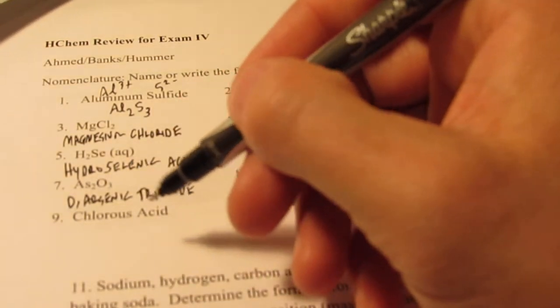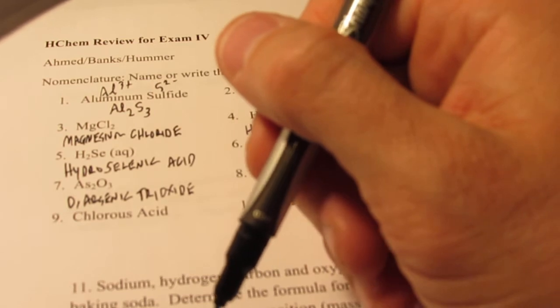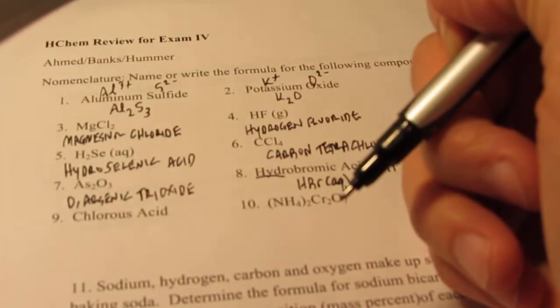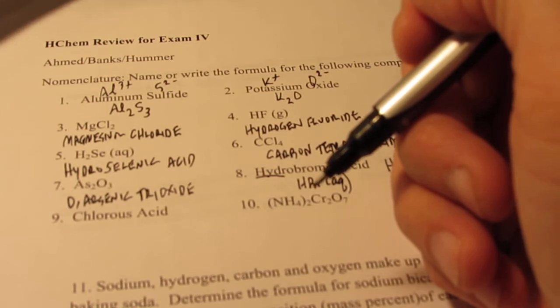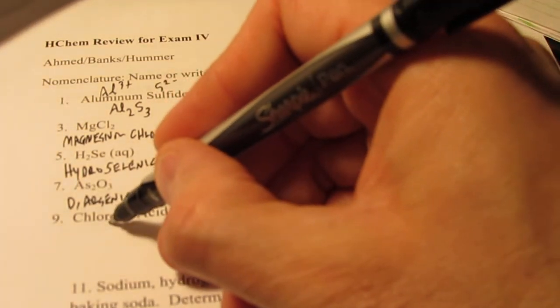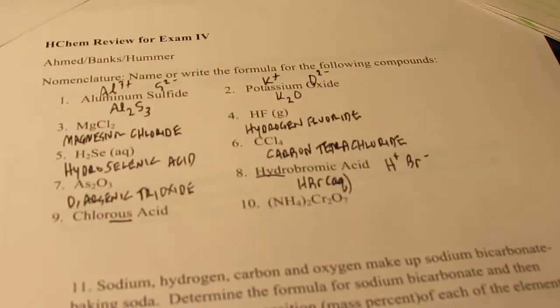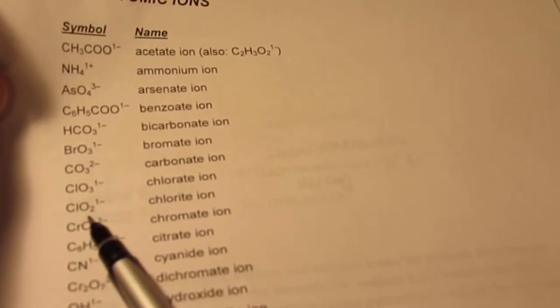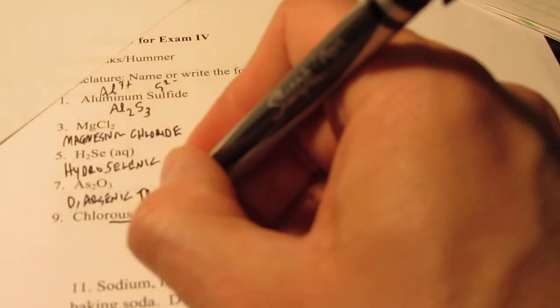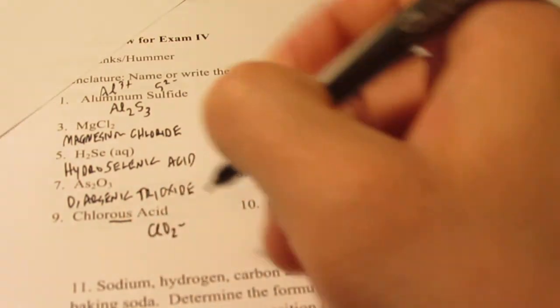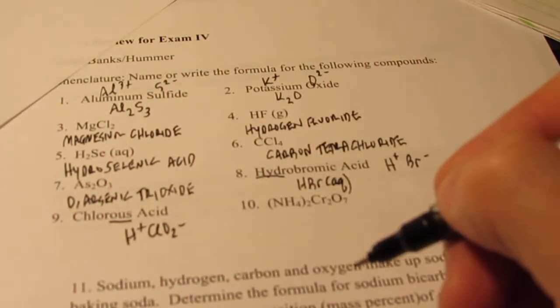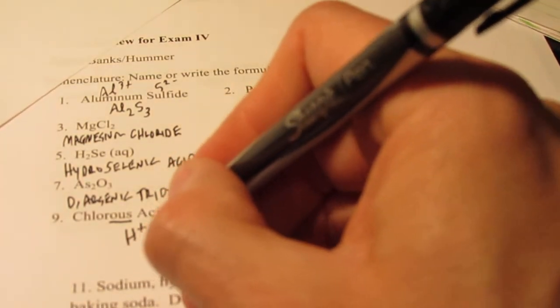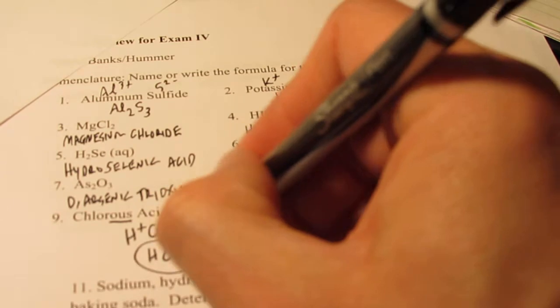Chlorous acid. Now this guy has more than two elements in it. It's an acid that does not start with hydro. So how do we write the formulas for those? Do you remember? Yeah, if it's an ous acid, it comes from an ite ion. So we want to find the chlorite ion. Here it is. And you'll have access to this polyatomic chart for your test. So chlorite is ClO2, negative one. So if chlorite is ClO2, negative one, hydrogen will act as a metal with a positive one charge. That's positive one, that's negative one. My acid is HClO2.